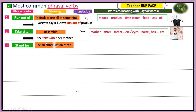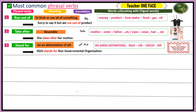Number three, we have 'stand for.' Stand for is used when there is an abbreviation — letters that stand for certain words. For example, NGO stands for Non-Governmental Organization. Other examples include SOS, VIP, UN, NSF — letters that are abbreviations of foundations or organizations. Stand for goes with capitalized letters.